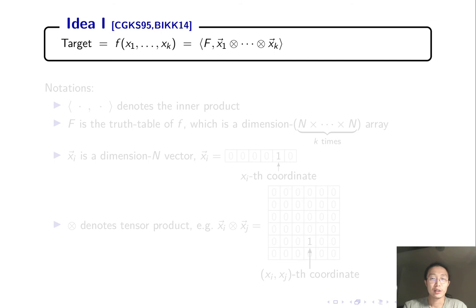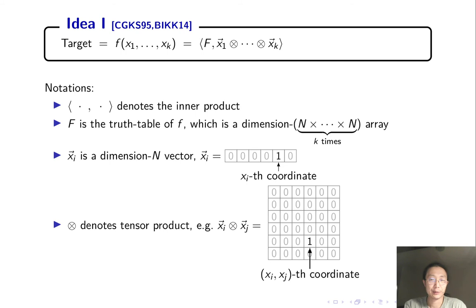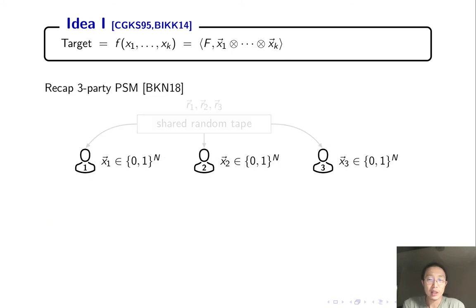The first idea in the construction is that the function we want to compute can be rewritten as a multilinear function. This is obvious if you are familiar with notation. This bracket means inner product. F is the truth table of F. Xi can be converted into a vector. It's zero everywhere except for the number Xi coordinate. Finally, tensor product. The tensor product of two vectors is a matrix. And the tensor product of a matrix and a vector is a cube, and so on.